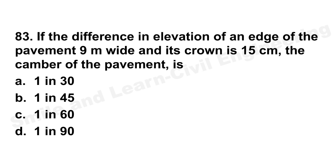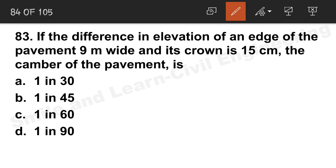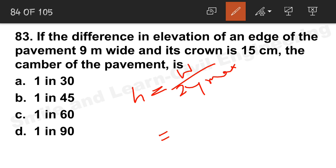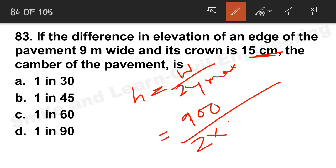Question 83: Difference in elevation of the edge of a pavement 9 m wide with a crown height (camber) of 15 cm. Using h = (W/2) × (1/n), with W = 900 cm and h = 15 cm, the gradient works out to 1 in 30. The correct answer is 1/30.